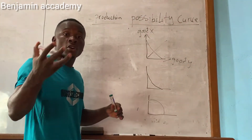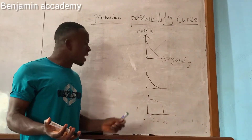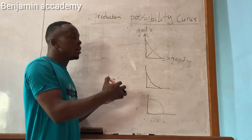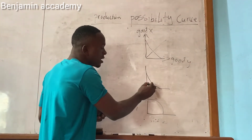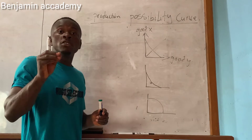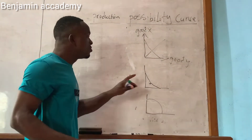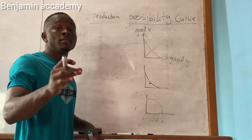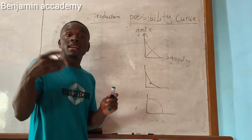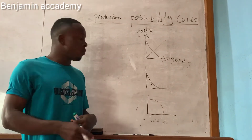A concave PPC shows the country producing two goods — good X and good Y — but operating in the innermost part of the curve. This is because the level of technology is small, the population size is small, resources are not fully utilized, and the standard of living is low.